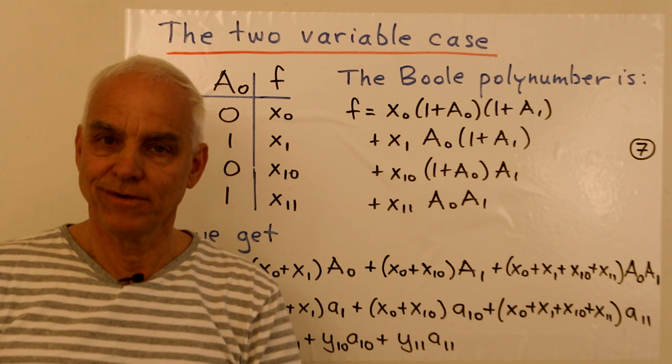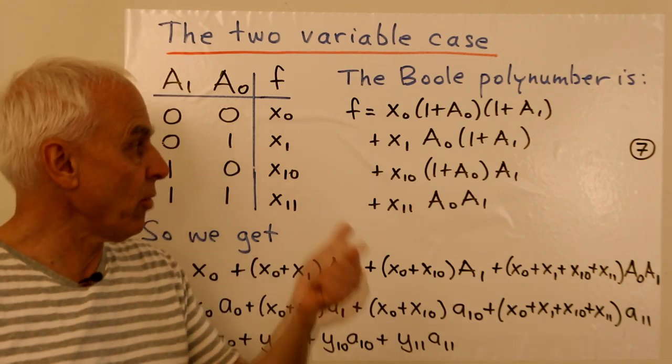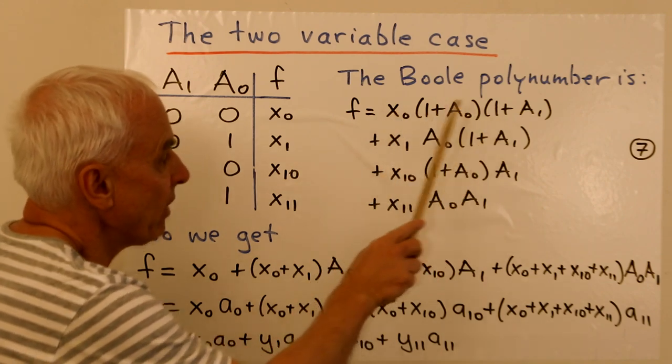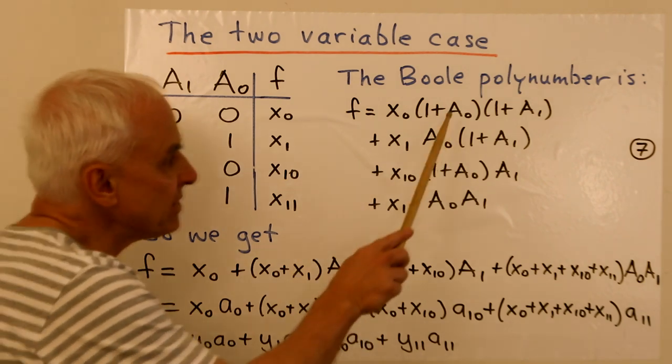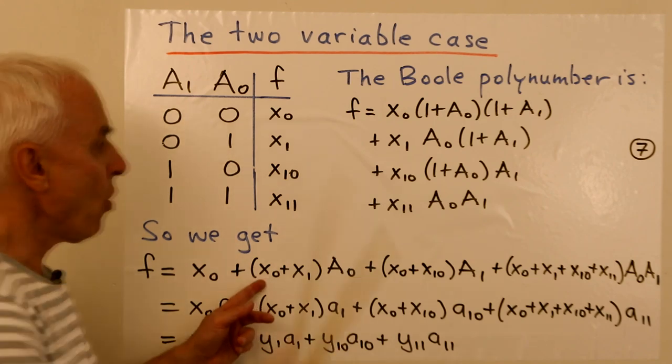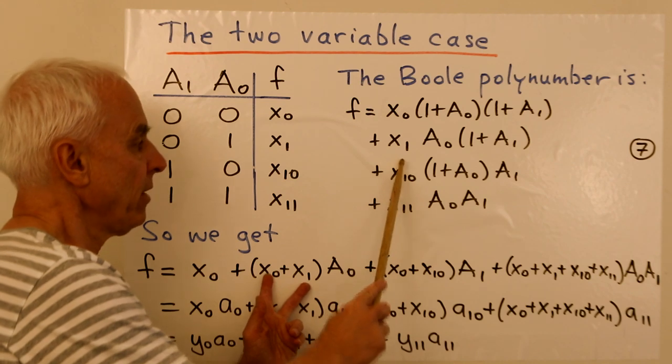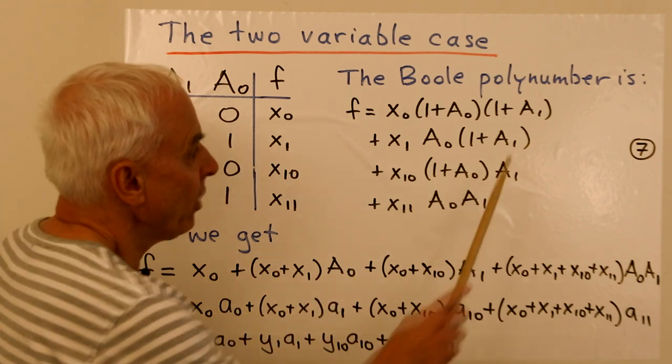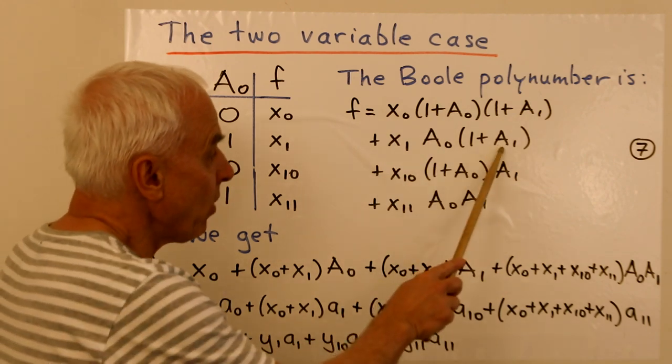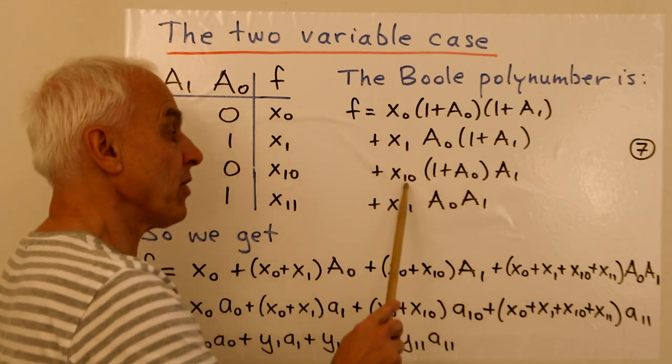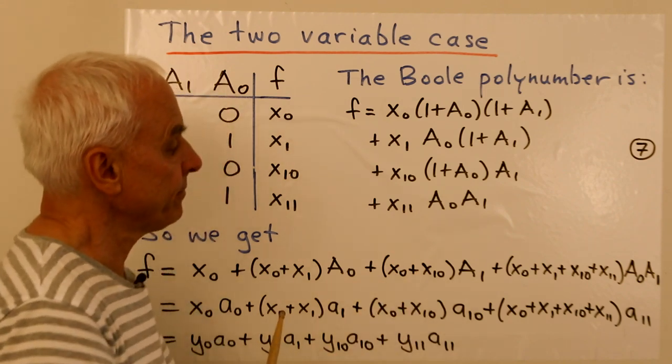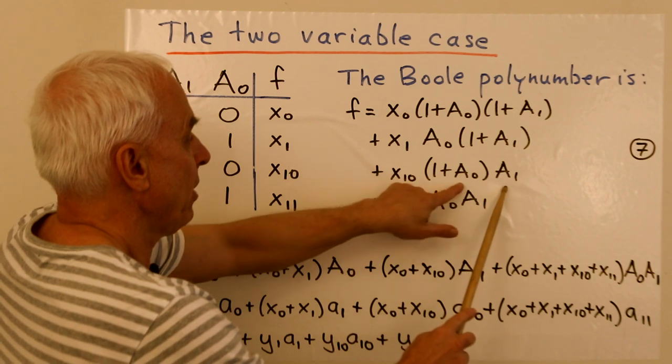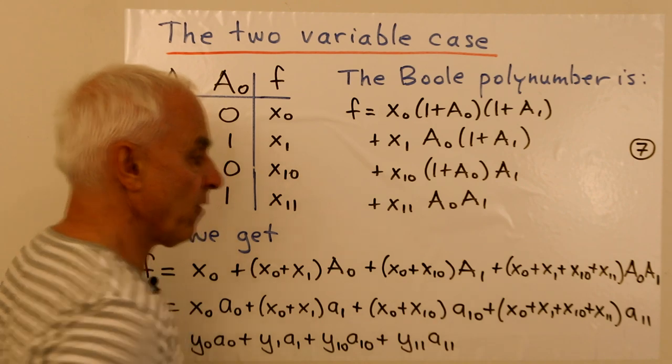And now we can attempt to expand this out as a polynumber in the usual A0 and A1. So the constant term, which doesn't involve either A0 or A1, is only found by multiplying that 1 by that 1 with a coefficient of x0. The A0 term. We get A0 by multiplying this times this with a coefficient of x0, or by multiplying this A0 times 1 with a coefficient of x1. And otherwise, we don't get a single A0. So we get (x0 + x1) times A0. How about just A1 by itself? We get A1 times 1 there with a coefficient of x0. We get an A1 times 1 here with a coefficient of x2. So (x0 + x2) times A1. And finally, the product A0 times A1. We get the x1 appearing. We get the x2 appearing. And we get the x3 appearing. So all four of them appear there.